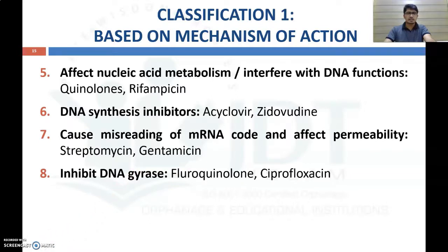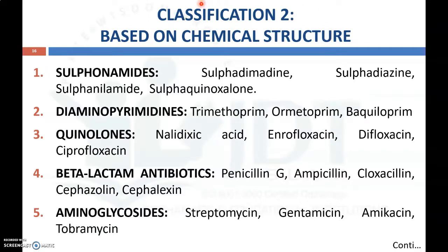That is the first classification based on mechanism of action. Now coming to the second classification of antibiotics, which is based on chemical structure — this is the classification studied in pharmacology. Antibiotics are classified according to their chemical structure or the basic ring present in the antimicrobial agent. They are classified as sulfonamides — examples include sulfadiazine, sulfanilamide, and sulfamethoxazole — and diaminopyrimidines like trimethoprim, ormetoprim, and baquiloprim.